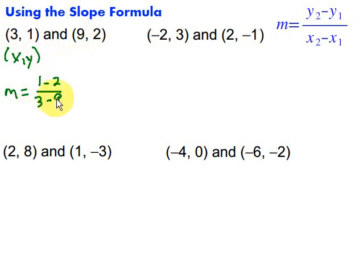If I were to flip either of those, I would need to flip the other ones. So I can simplify this. So we have 1 minus 2 would be negative 1 over 3 minus 9 would be negative 6, which would simplify to 1 sixth.